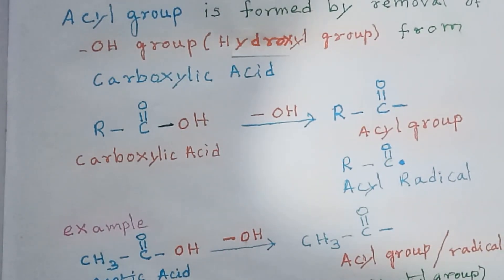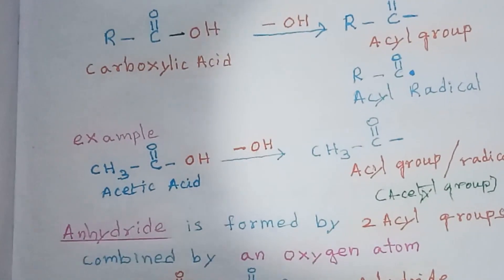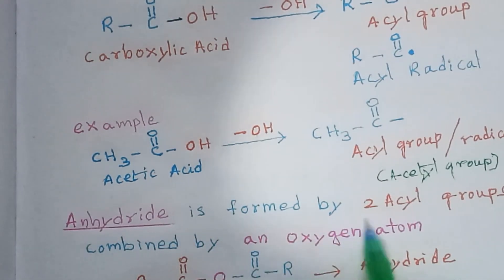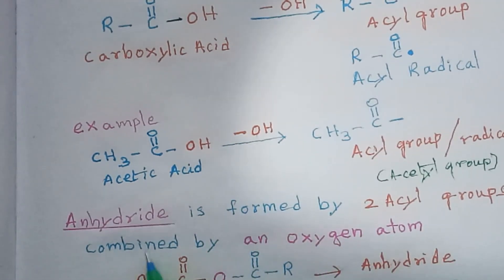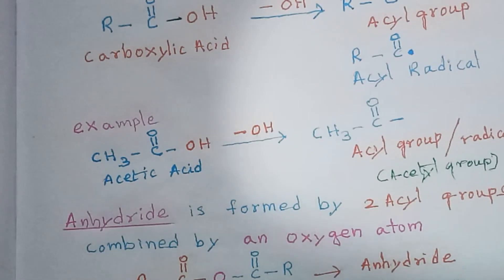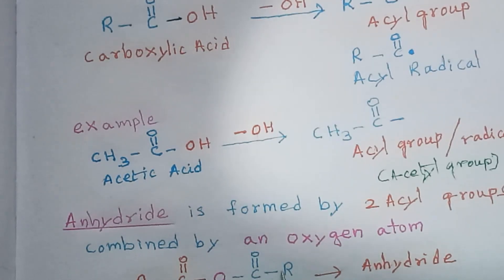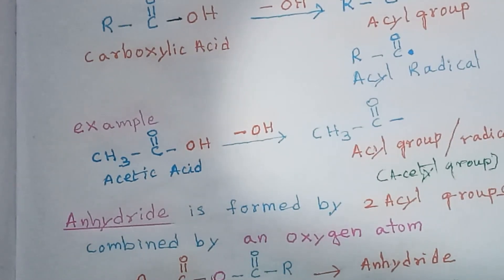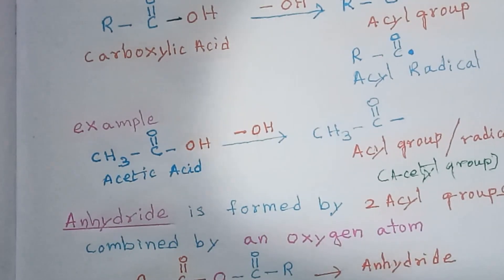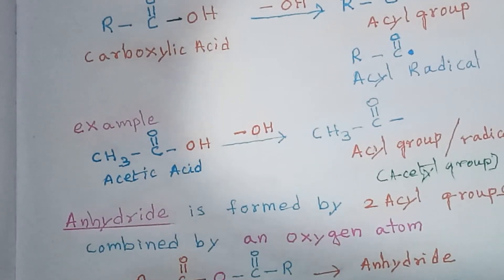Now let's see what an anhydride is. An anhydride is formed by two acyl groups combined by an oxygen atom. The structure is R-C double bond O — O — C double bond O-R, where one acyl group and another acyl group are joined by one oxygen atom in the middle.